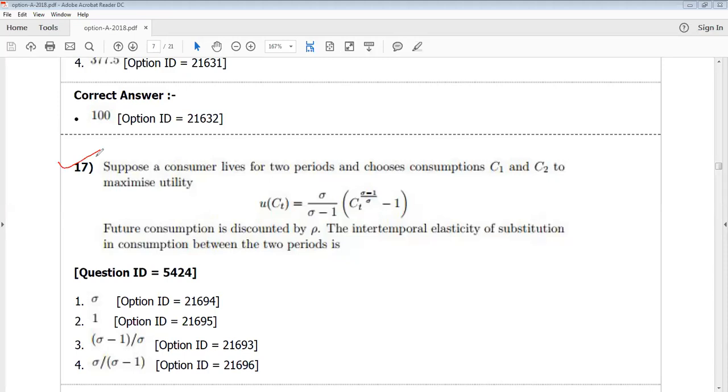DSC 2018 question number 17. U of C is equal to this. A consumer lives for two periods and chooses consumption C1 and C2.